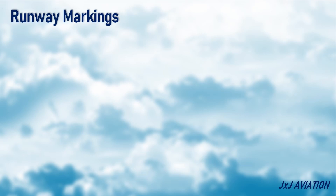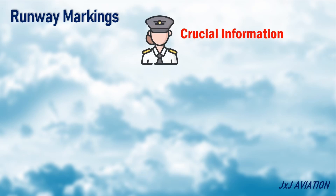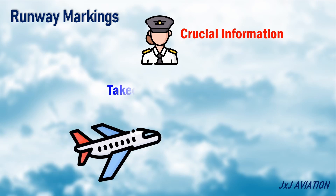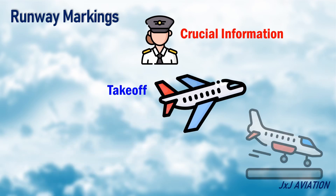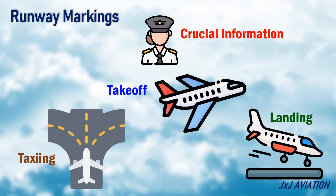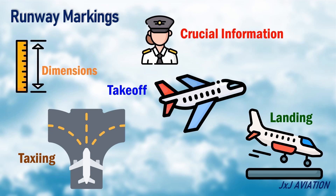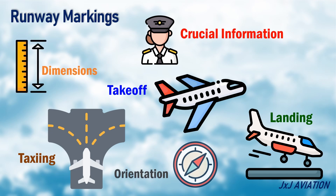The markings on a runway provide crucial information to pilots during takeoff, landing, and during taxiing. These markings give information regarding a runway's dimensions, orientation, and hazards.